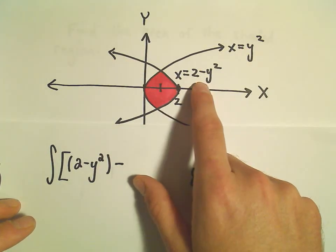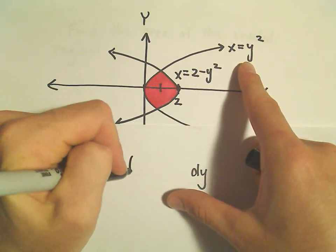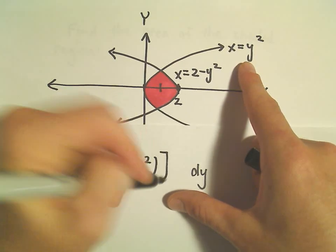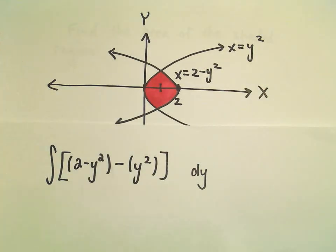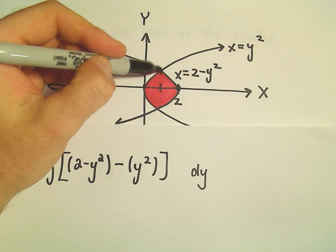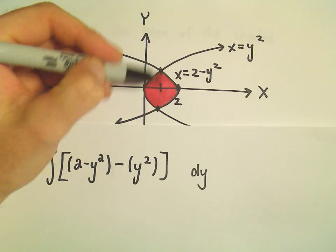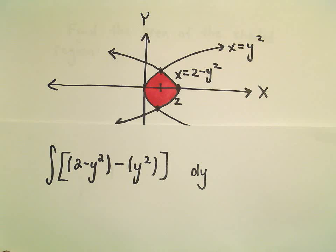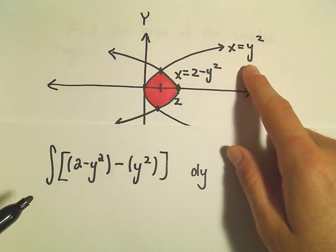So, the rightmost curve, 2 minus y squared, minus the leftmost curve, y squared. And now, the limits of integration will come from the y-axis. So, we're going to have to figure out the smallest y-coordinate and the largest y-coordinate. And to do that, we can just set the curves equal to each other.